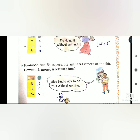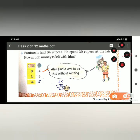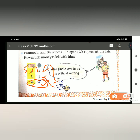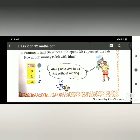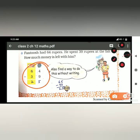Fantoosh had 64 rupees. He spent 39 rupees at the fair. How much money is left with him? 64 rupees, he spent 39 rupees. 4 cannot subtract 9, so we carry one, making this 14 and this becomes 5. 14 minus 9 is 5, 5 minus 3 is 2. Answer is 25. Otherwise, you can make 64 into 65 or 39 into 40, but I don't use this method much. It's better to use the numbers given for division or subtraction, then you'll get the right answer.